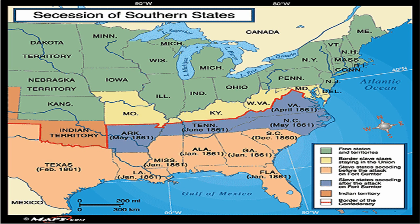Now, in order to understand this, you have to understand one major thing that has several parts to it. The whole entire southern Confederacy did not secede at once. A lot of people who aren't really good in American history just assume that right after Lincoln's election, all of the southern states that voted for Breckenridge seceded. That's not true. Secession was mainly a gradual process.